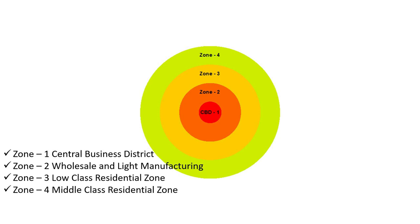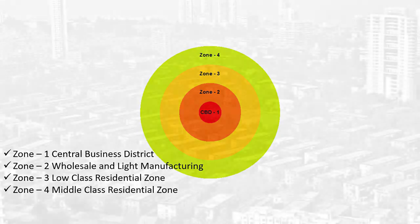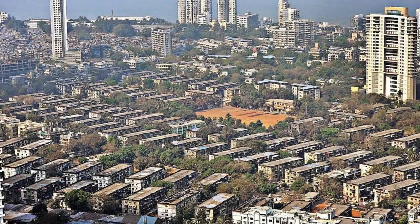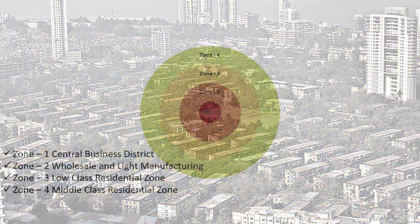Zone Four: Middle Class Residential Zone. Here, middle class people stay. Houses are bigger and better than they are in Zone Two. It is the area of less densely populated people, and mostly government employees stay here.